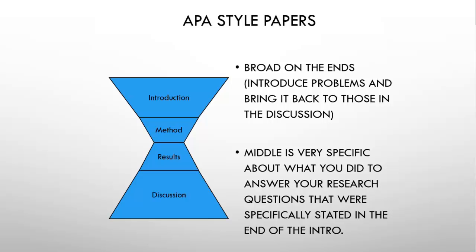Your discussion will also include any limitations of the study. For example, we are using what's called a convenience sample — we're just asking students in the class questions — and that's going to cause problems with generalizability, which we'll talk about later in the course. You can also talk about future directions: my study provided evidence towards this way of thinking, but future studies need to examine X, Y, and Z. You end by telling other people how to build on what you've done, and then you end the discussion fanning out again, making it important for everyone reading your paper.